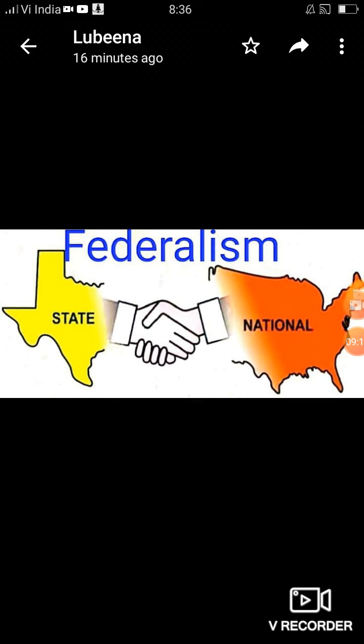इसका दूसरा example है Minerva Mills versus Union of India, 1980। इसमें Companies Act का section 4 और 55 को challenge किया गया था। Companies में जो tax लगाया जा रहा था उसमें bond sign करवाया जा रहा था कि आप किसी भी court में नहीं जा सकते और judicial review नहीं करा सकते। तब court ने कहा कि ऐसा नहीं हो सकता — आप judicial review को नहीं खत्म कर सकते क्योंकि judicial review भी basic structure का हिस्सा है।